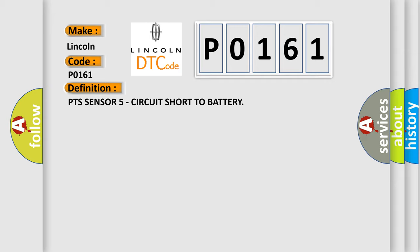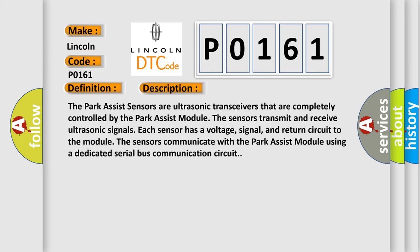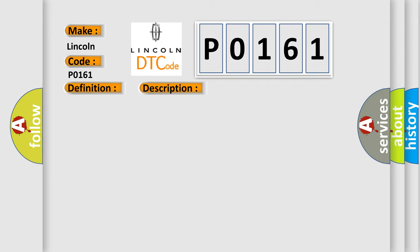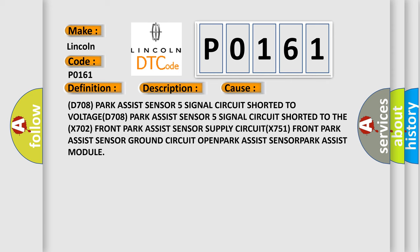Here is a short description of this DTC code. The park assist sensors are ultrasonic transceivers that are completely controlled by the park assist module. The sensors transmit and receive ultrasonic signals. Each sensor has a voltage, signal, and return circuit to the module. The sensors communicate with the park assist module using a dedicated serial bus communication circuit. This diagnostic error occurs most often in these cases: park assist sensor 5 signal circuit shorted to voltage, park assist sensor 5 signal circuit shorted to the front park assist sensor supply circuit, front park assist sensor ground circuit open, park assist sensor, or park assist module fault.